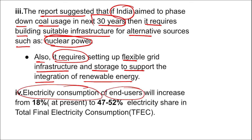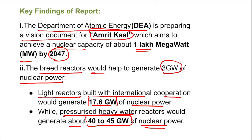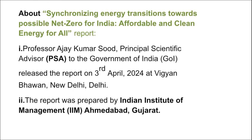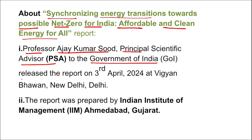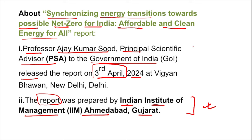The report also suggested that if India aims to phase down coal usage in the next 30 years, it requires building suitable infrastructure for alternative resources such as nuclear power, and setting up flexible grid infrastructure and storage to support the integration of renewable energy. Electricity consumption by end users will increase from 18% as of now to 47–57% share in total final electricity consumption. This report — 'Synchronizing Energy Transition Towards Possible Net Zero for India: Affordable and Clean Energy for All' — was released by Professor Ajay Kumar Sood, Principal Scientific Advisor to the Government of India, on 3rd April 2024 at Vigyan Bhavan, New Delhi. The report was prepared by IIM and IIT Gujarat.